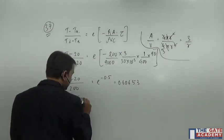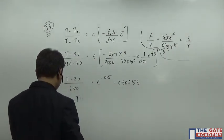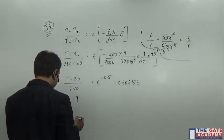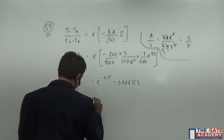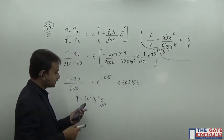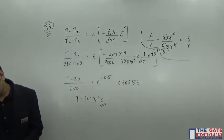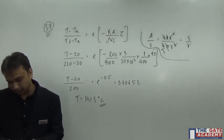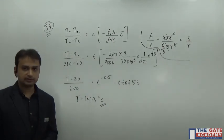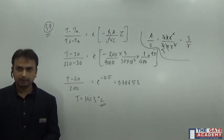And so from here you will get the value of T. So I am getting 141.3 degree Celsius. Because we did not convert it into Kelvin, it is going to be in degree Celsius. And let us check. Yes, it's 141.3 degree Celsius, which is option A. So this is how you are going to solve this problem.